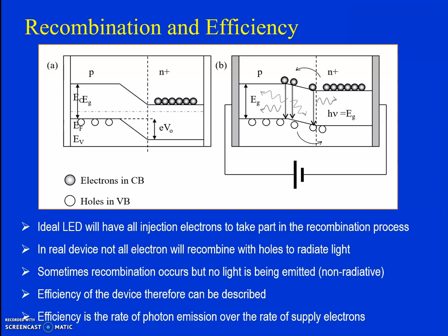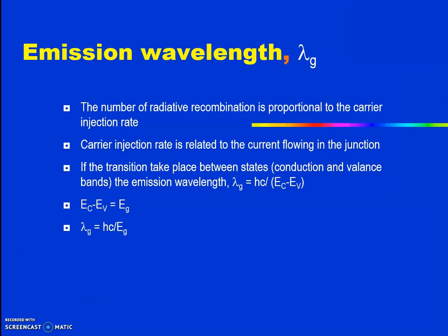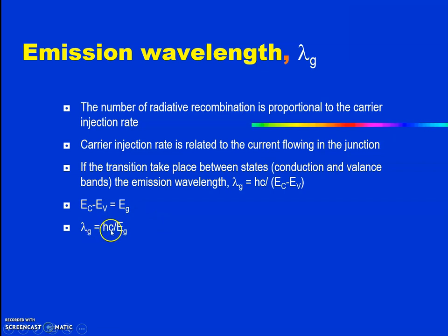The efficiency of the device depends upon how many charge carriers are going to recombine. The emission wavelength depends upon the number of radiative recombinations, given by EC minus EV equal to EG. So λG = hC / EG, which gives the corresponding emission wavelength.